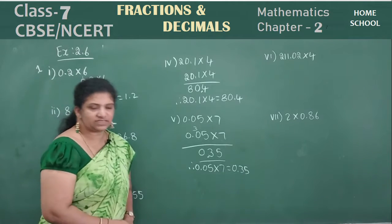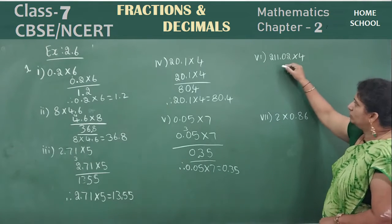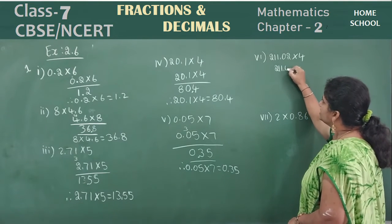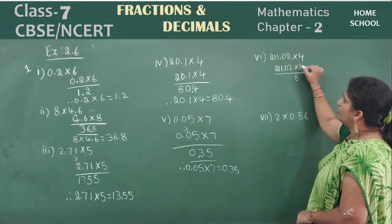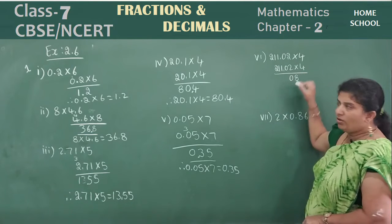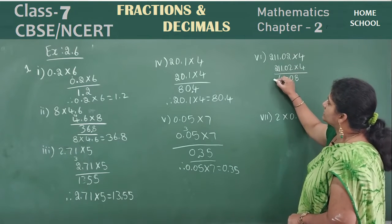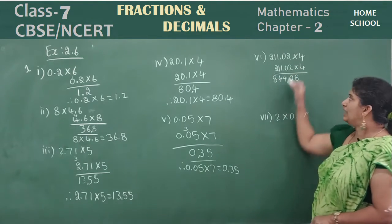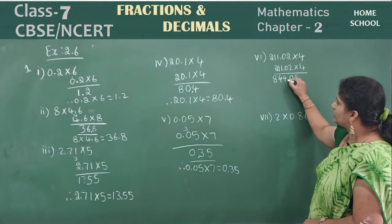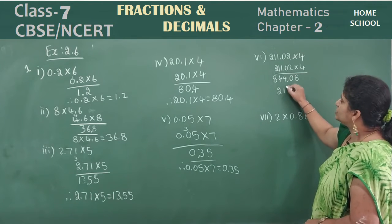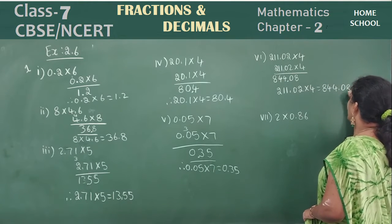The sixth one: 211.02 into 4. Rewrite and start multiplying. 4 twos are 8. 4 into 0 is 0. 4 ones are 4. 4 ones are 4. 4 twos are 8. Now where do I put the point? After two decimal values in the question, put after two decimal values in the answer. Therefore, 211.02 into 4 is equal to 844.08 is your answer.